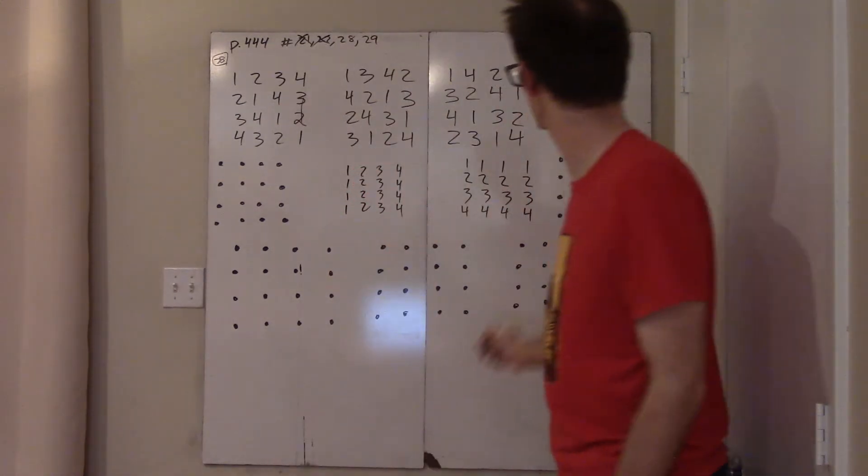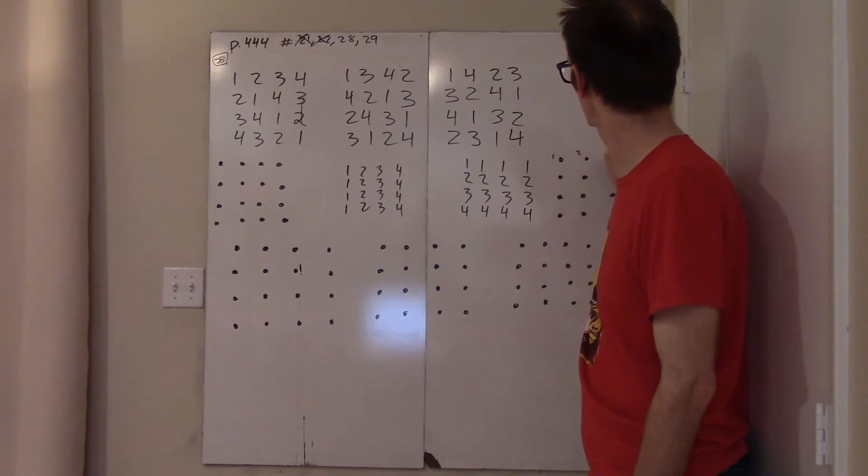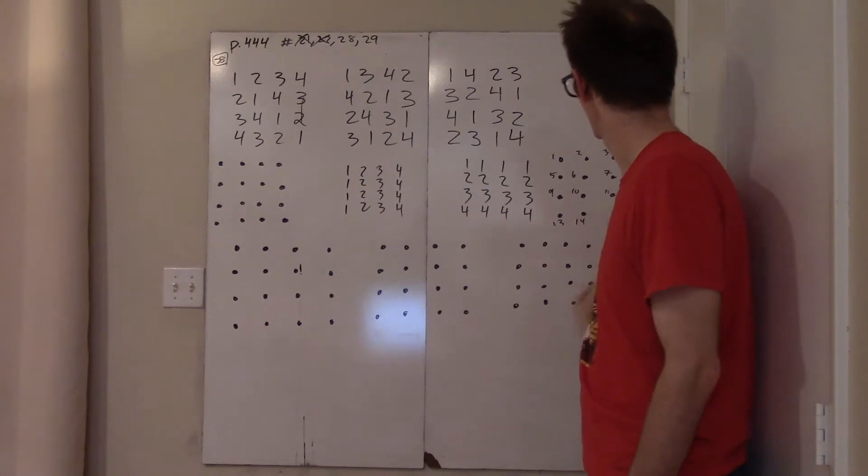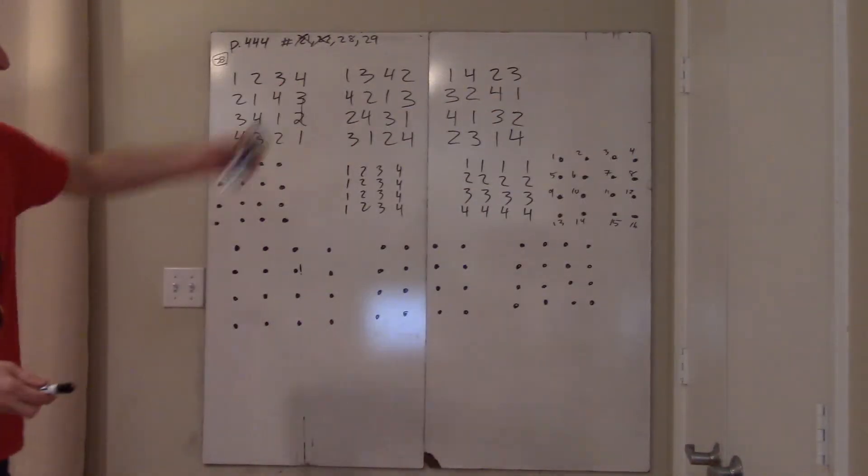I want to label these points in a standard way. So one, two, three, four, five, six, seven, eight, nine, ten, eleven, twelve, thirteen, fourteen, fifteen, sixteen. Okay, and now I just do it.